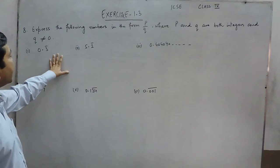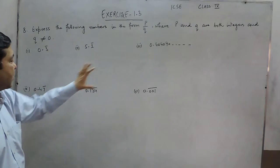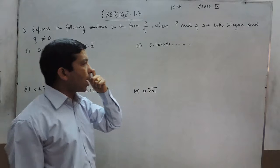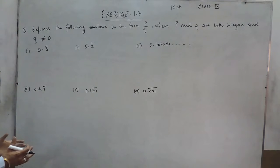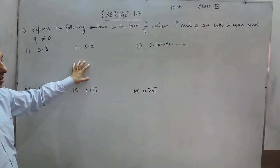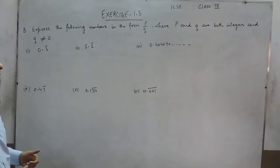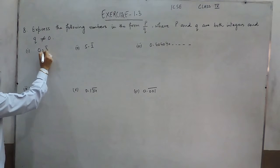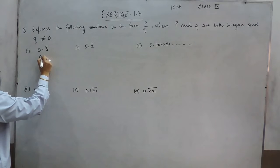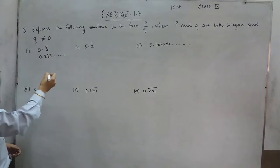Hello everyone. In question number 8 we have to express all these parts in the form of P upon Q where P and Q are both integers. We already know that any number which is non-terminating and repeating itself can be represented in the form of P upon Q. So when I am saying 0.3 bar that actually means 0.333 endlessly.